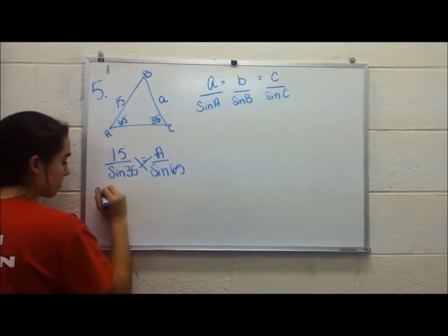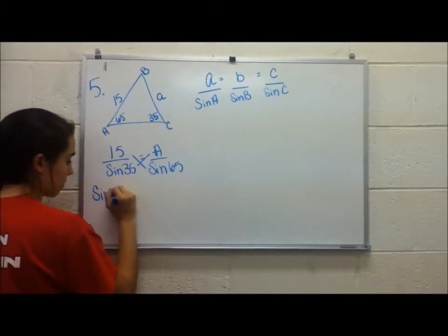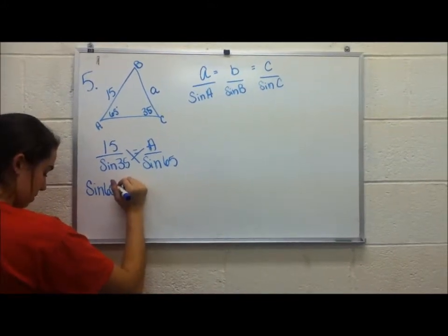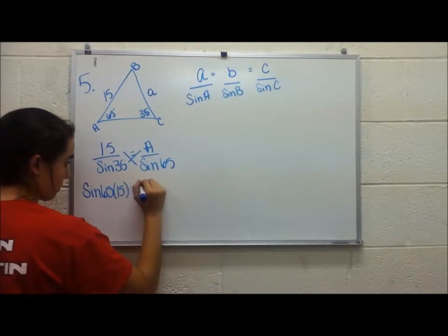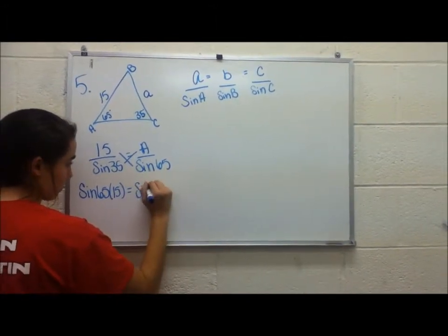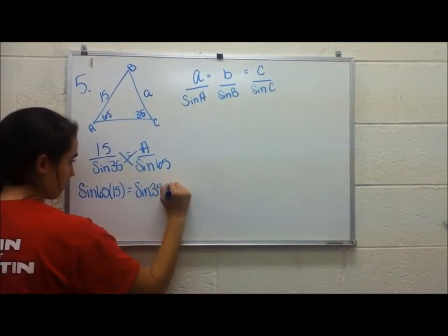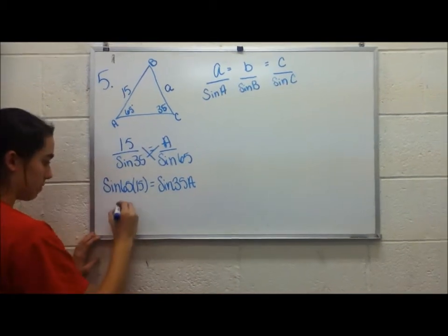And when you do, you get the sine of 65 times 15 equals the sine of 35A.